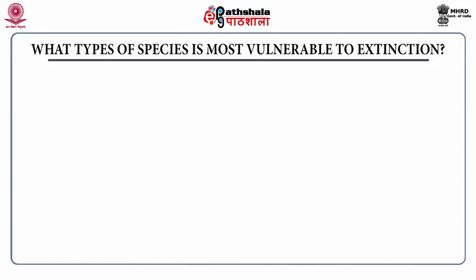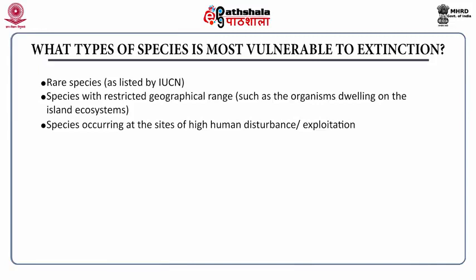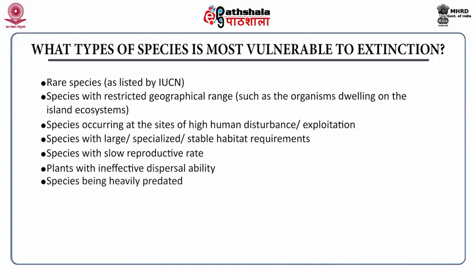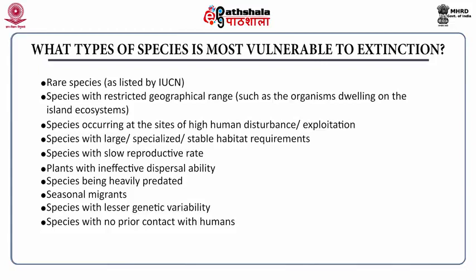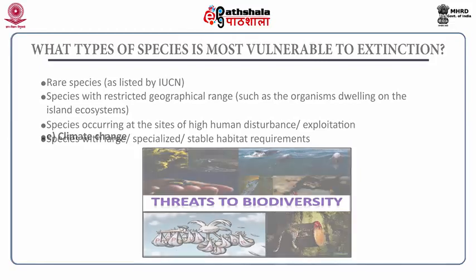A question arises: what type of species are most vulnerable to extinction? Rare species as listed by IUCN, species with restricted geographical range such as organisms dwelling on island ecosystems, species occurring at sites of high human disturbance or exploitation, species with large or specialized or stable habitat requirements, species with slow reproduction rates, plants with ineffective dispersal ability, species being heavily predated, seasonal migrants, species with less genetic variability, species with no prior contact with humans, and species closely related to extinct or threatened species. These types of species are more vulnerable and their extinction can take place at a faster rate.